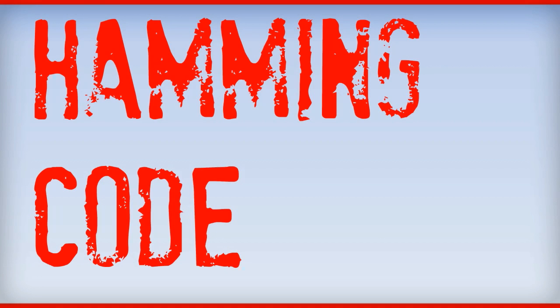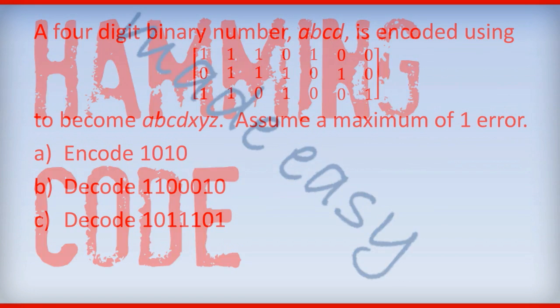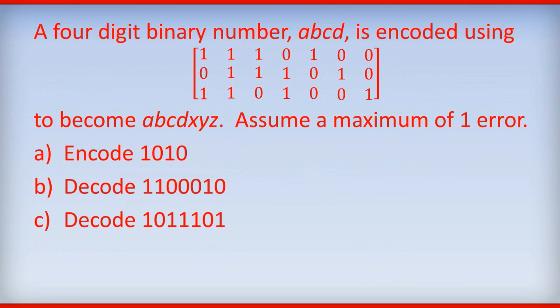Today, Hamming code made easy. Here's a typical exam question. You can see the reference to binary number. That means that we're going to represent all data, all messages, with ones and zeros.